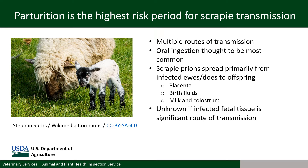While there are multiple potential routes of exposure and shedding of Scrapie prions, oral ingestion of prions shed from infected animals is thought to be the most common route. Scrapie prions are thought to be spread primarily from infected ewes or does to their offspring and other lambs or kids, and less frequently to adult sheep and goats, through contact with the placenta, birth fluids, and contaminated lambing and kidding areas at or shortly after parturition and through milk or colostrum. Therefore parturition is considered to be the highest risk period for transmission of Scrapie.